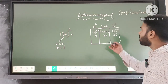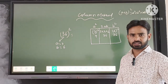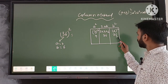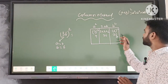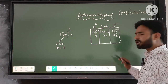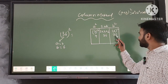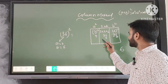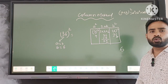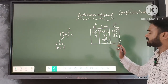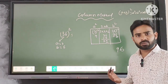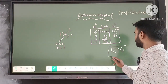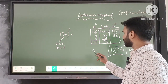Now, how will we add these numbers to obtain the square of 36? First, we take the unit digit of b² — the unit digit of 36 is 6, so we write 6. The remaining 3 is carried and added to the middle column: 36 + 3 = 39. We take the unit digit 9, carry 3, and add it to the first column: 9 + 3 = 12. So the final answer is 1296 — that is the square of 36.